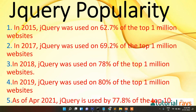If you want to check its popularity: in 2015, 62% of the top 1 million websites were using jQuery; in 2017, 69.2%; in 2018, 78% of top 1 million websites; in 2019, 80%; and as of 2021, jQuery is used by 77.8% of the top 10 million websites. You can understand its popularity — almost 80% of websites in the world are using jQuery, so you should be serious enough to learn it.